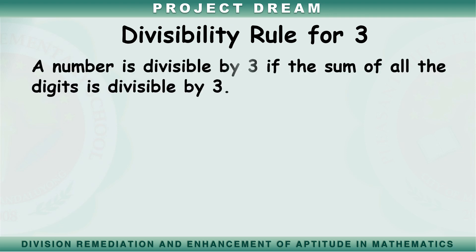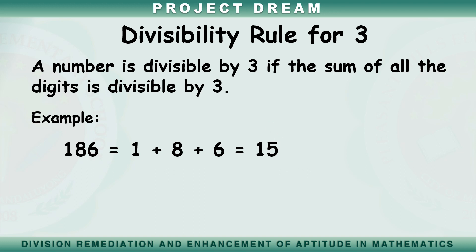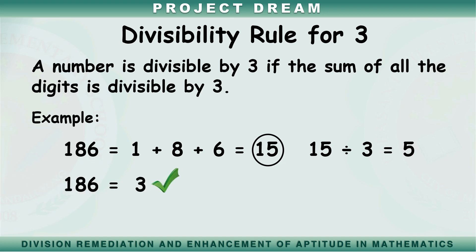Divisibility rule for 3: a number is divisible by 3 if the sum of all the digits is divisible by 3. Let's have an example. Is 186 divisible by 3? Let's add the digits: 1 plus 8 plus 6 equals 15. The sum of the digits is 15. Is 15 divisible by 3, or can we divide 15 by 3 without remainder? Yes — 15 divided by 3 equals 5. Therefore, 186 is divisible by 3.